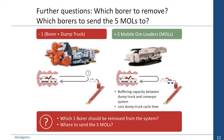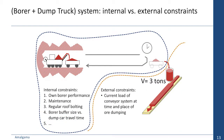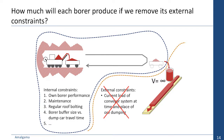The more specific questions were: which exactly borer to remove, and where to send those five MOLs? To approach these questions with simulation, let's first consider the simple system of borer plus dump truck. This system has its own internal constraints — borer performance, maintenance, time needed for maintenance, regular roof bolting requiring process stops — and it has one external constraint: the load of the conveyor system at the time and place of dumping. What MOLs do is remove this external constraint. So our idea is: how much will each borer produce if we remove its external constraint? To what extent is each borer constrained by its own internal constraints?